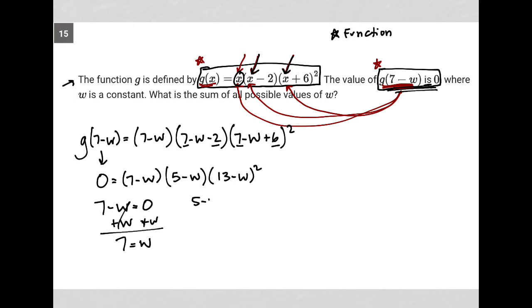In this second binomial, when I set that equal to 0 and add w to both sides, I get 5 equals w. In my third scenario, where I have (13 - w)², we'll keep the square for now.